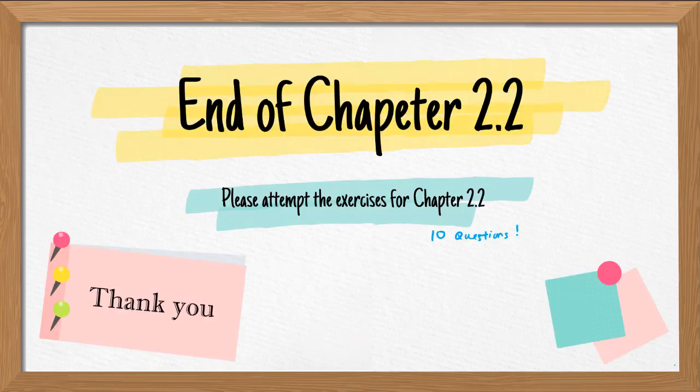That's the end of chapter 2.2 with 4 example questions. Next, please attempt your exercises in chapter 2.2 — there are 10 questions given. Practice and try to apply the skills to extract information, whether it is the first, second, or third scenario, and how to apply the suitable formula for Q. See you in the next video. Thank you.